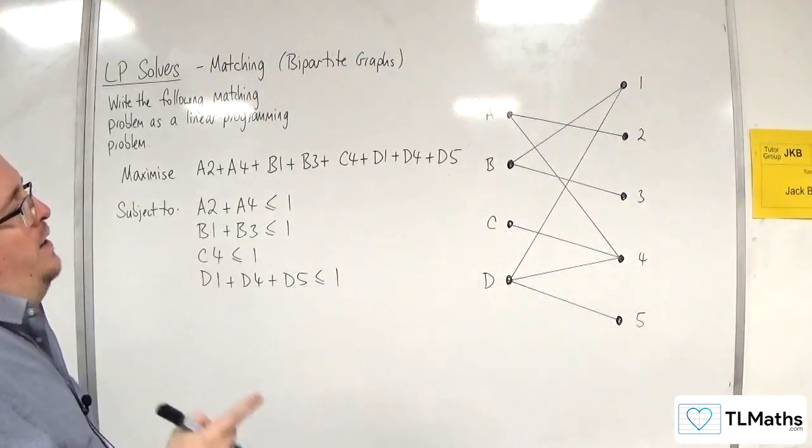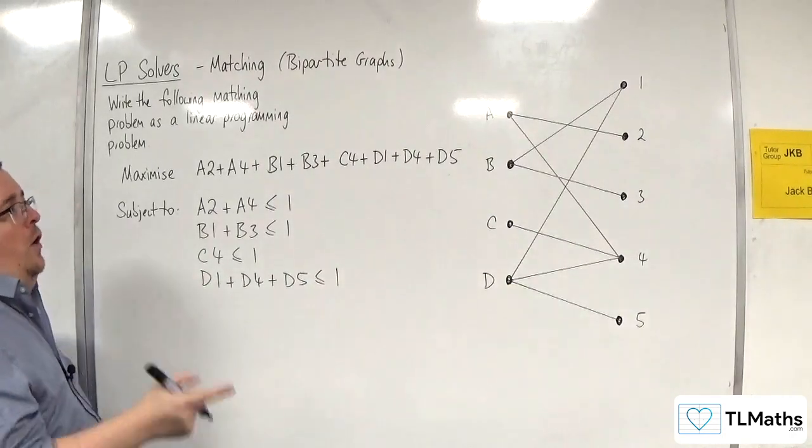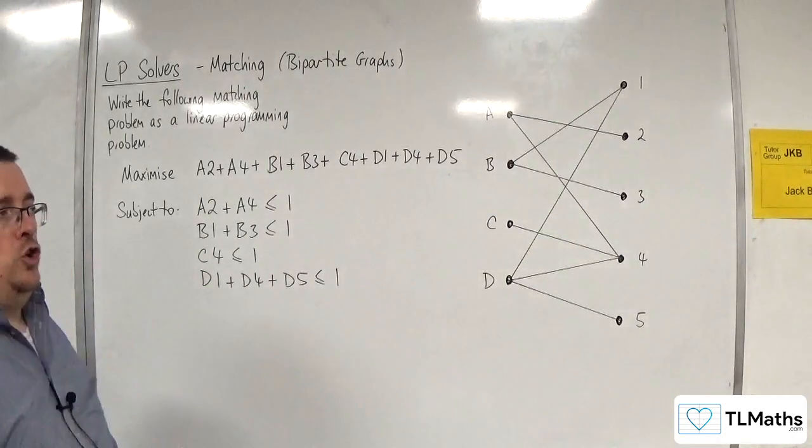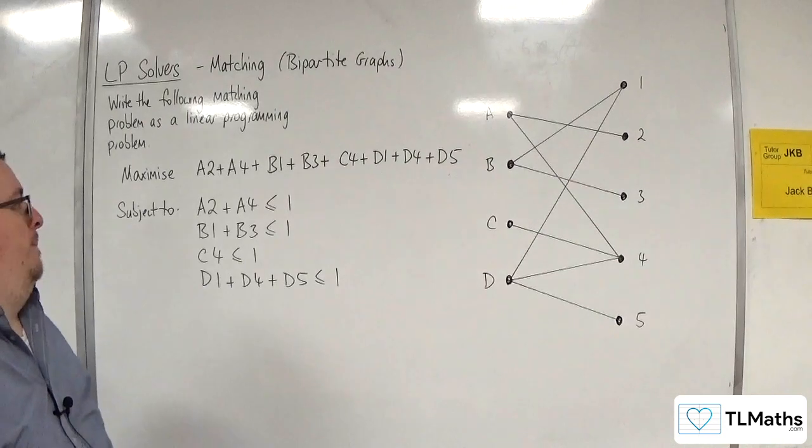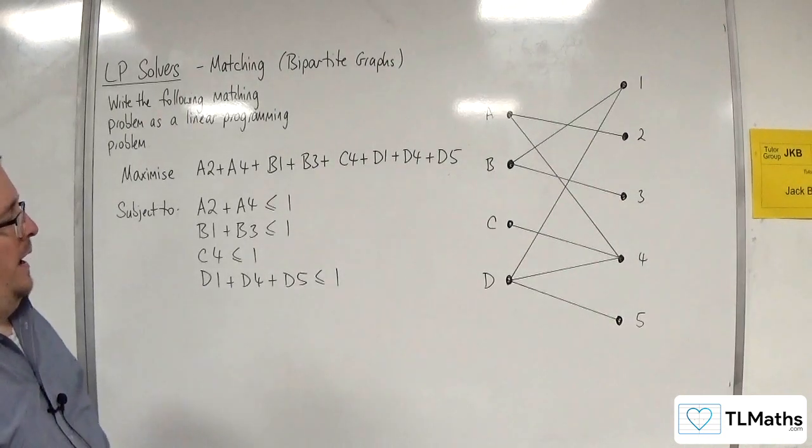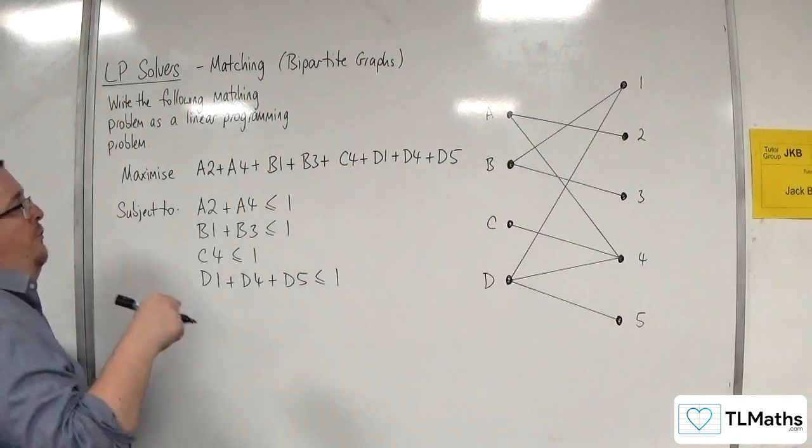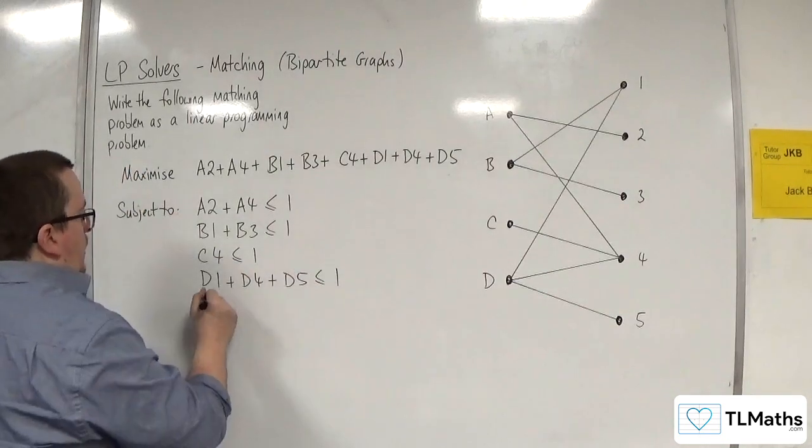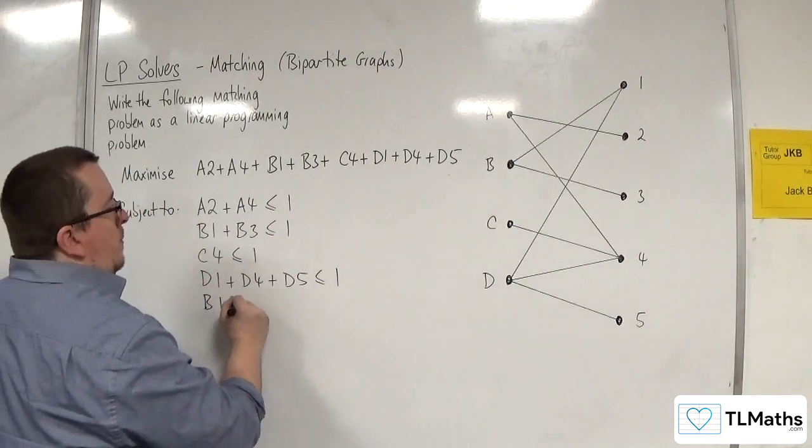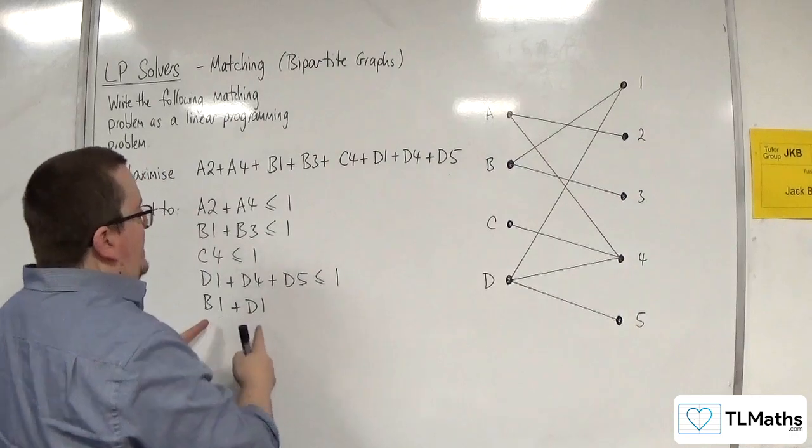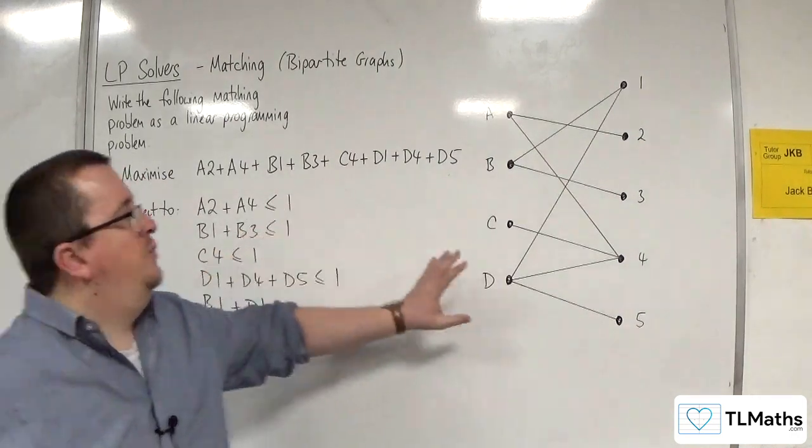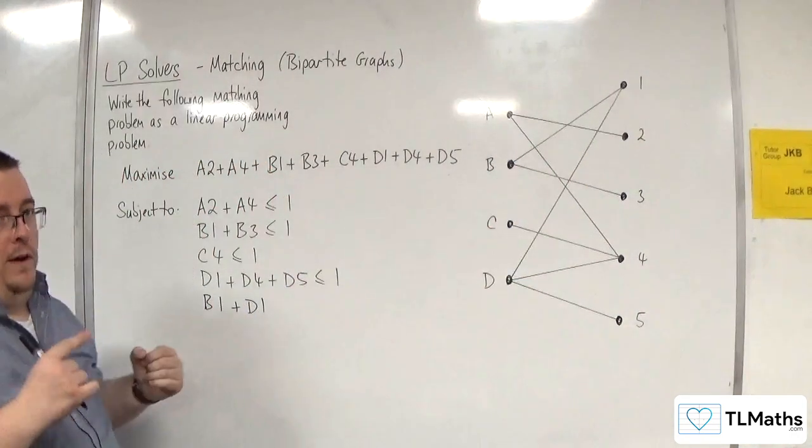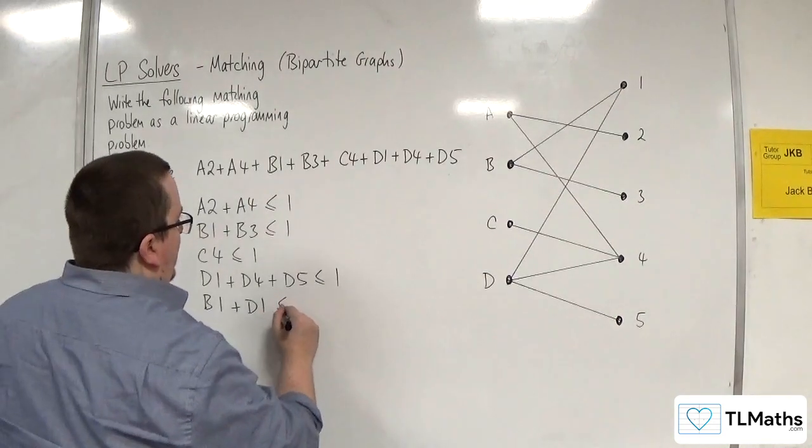Right, but then we need to put a restriction on we only want each of the jobs to be done by one person. So for job 1, we've got B1 + D1. So B and D, those two workers can do job 1, but I only want one of them to do job 1. So that's got to be less than or equal to 1.